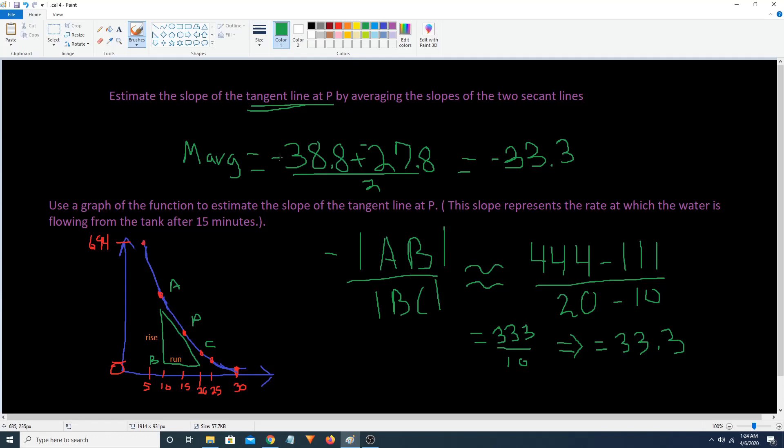And so if we look at the graph down here. We're going to have a tangent line. Let's see. Use this color. We're going to have a tangent line. Touching P like that.